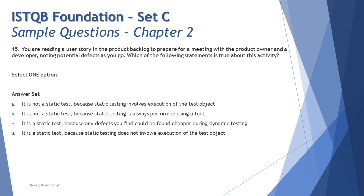Looking at option C: it is a static test because any defects you find could be found cheaper during dynamic testing. The first part is correct — yes, it is a static test — but the second part is twisted. If you pay attention, it says defects could be found cheaper during dynamic testing, but it's actually the other way around. Static testing helps us find defects that are cheaper to fix, whereas dynamic testing has more expenses involved. So defects found during static testing are cheaper, and the second part of option C contradicts this.